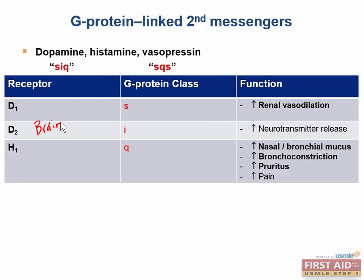The H1 receptor is of the G-sub-Q class, and it mediates increased nasal and bronchial mucus production. It also stimulates contraction of the bronchioles, making it harder to breathe, as well as skin pruritus and pain. When you have seasonal allergies, you can thank your H1 receptors for all of your misery.